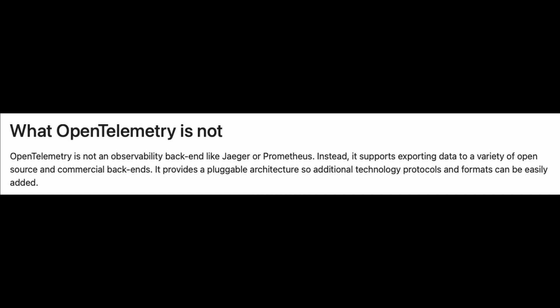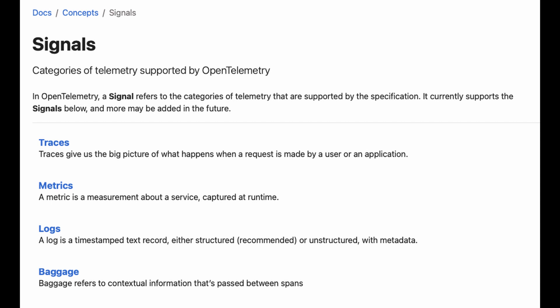That is important because OpenTelemetry itself is not a product. Vendors and other open source projects can come and build things that are OpenTelemetry compliant. The OpenTelemetry project defines four observability signals: traces, metrics, logs, and baggage. I would actually argue for a fifth, which are events — but you'll see why later in the video.